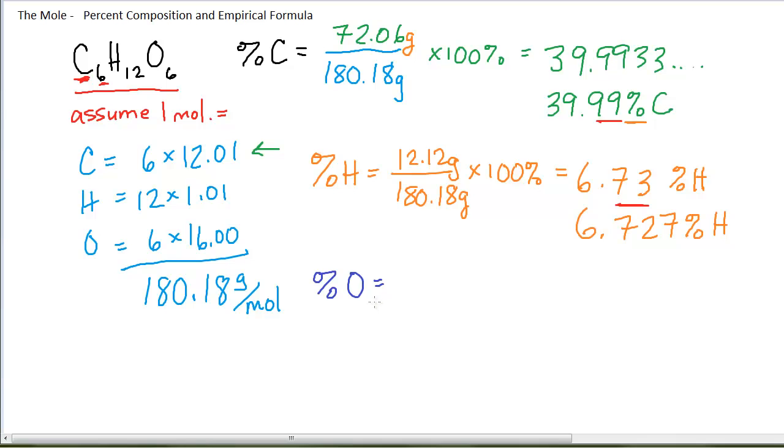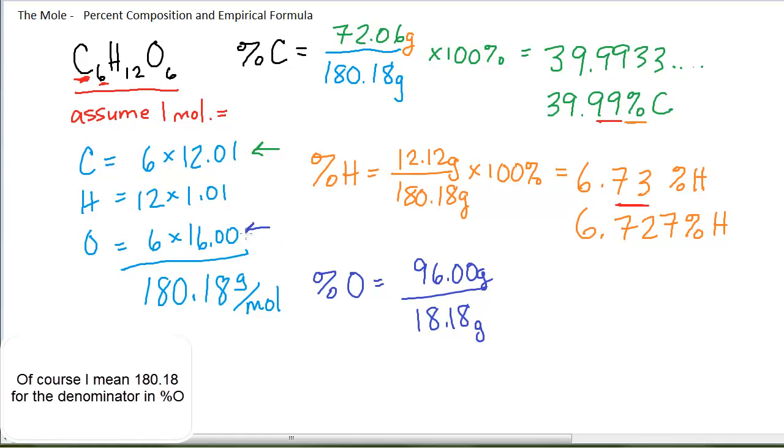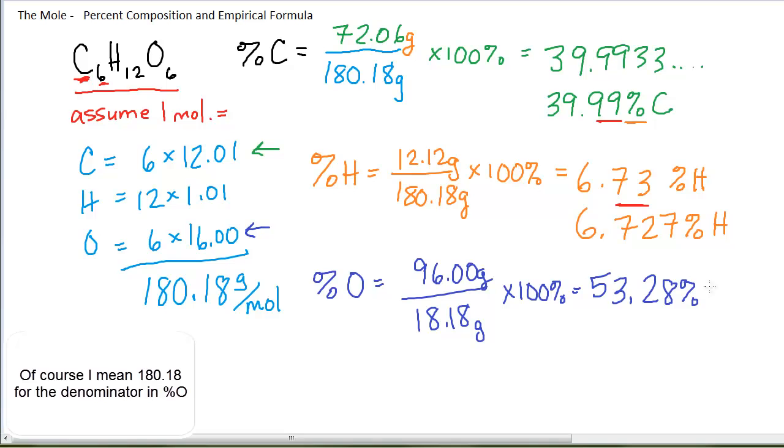Now the percent oxygen in this compound would be the part that is oxygen divided by the whole amount. You'll notice I got the 96.00 because there are six oxygens. Once I punch that in my calculator, my answer is 53.28 percent oxygen. So I have the three percentages of the three components, and one thing you might notice is that they should all add together to give me 100 percent. And if I add all three of these, I indeed do get 100 percent.